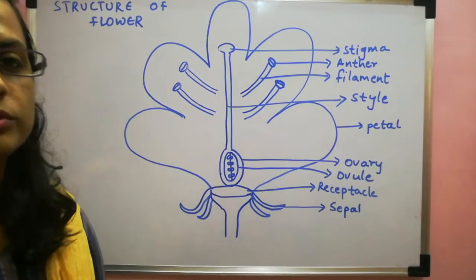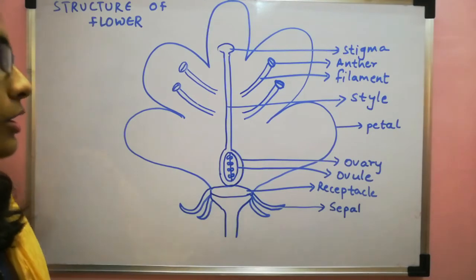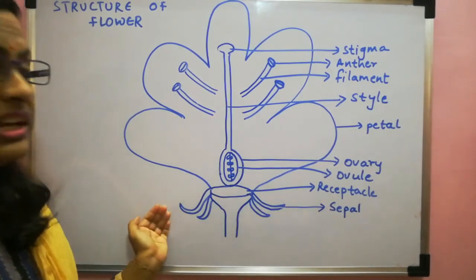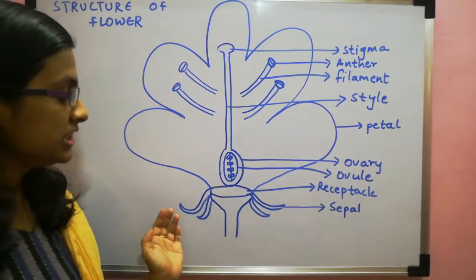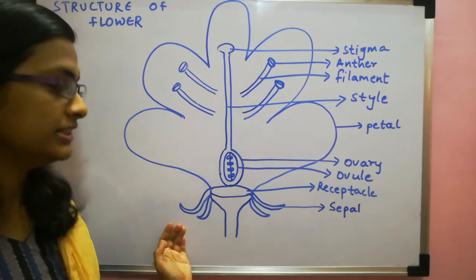Now we will discuss about the functions of the parts of the flower. So we will start from here. Sepals. Now sepals. These are green leafy structure which is present at the base of the flower. Its function is to protect the flower during bud stage.